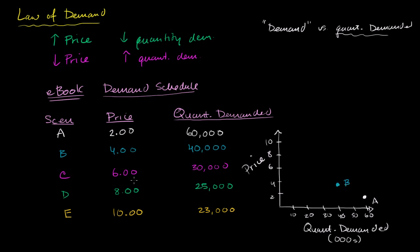Scenario C, $6, 30,000 units. $6, 30,000 units, right over there. Scenario C. Scenario D, $8, 25,000 units. $8, 25 is right about there. That looks like 25,000 right in between. That's close enough. So that right over there is scenario D.